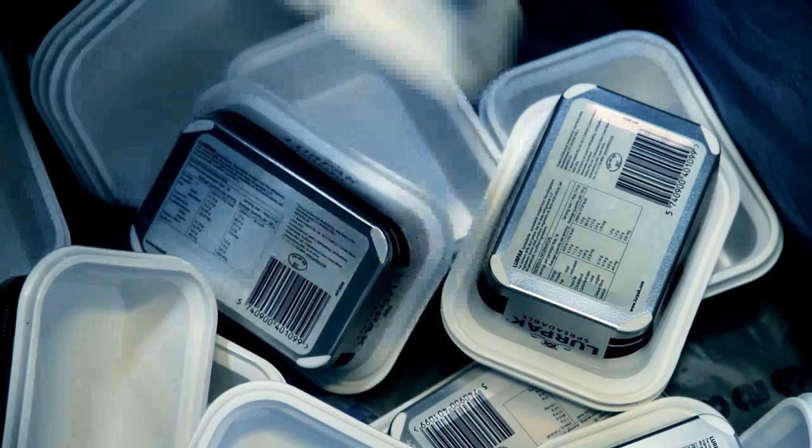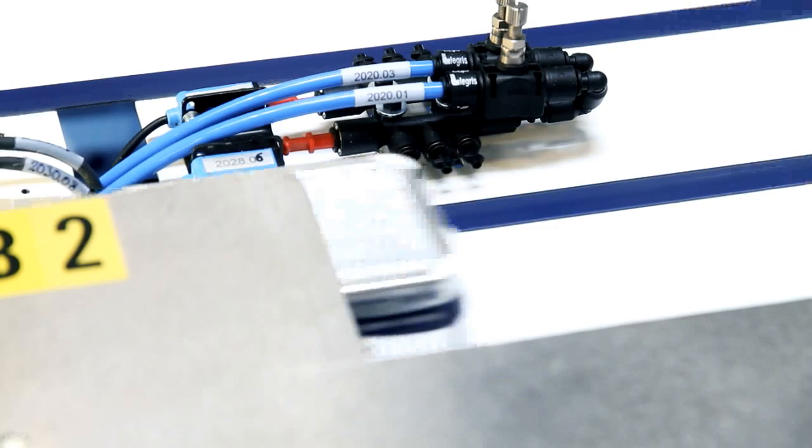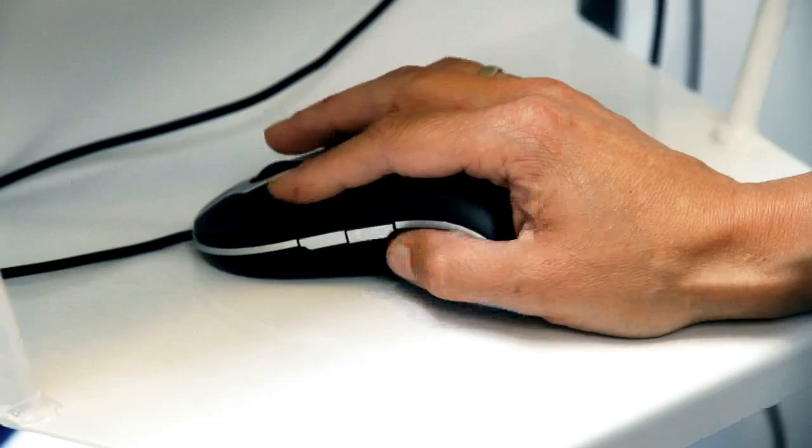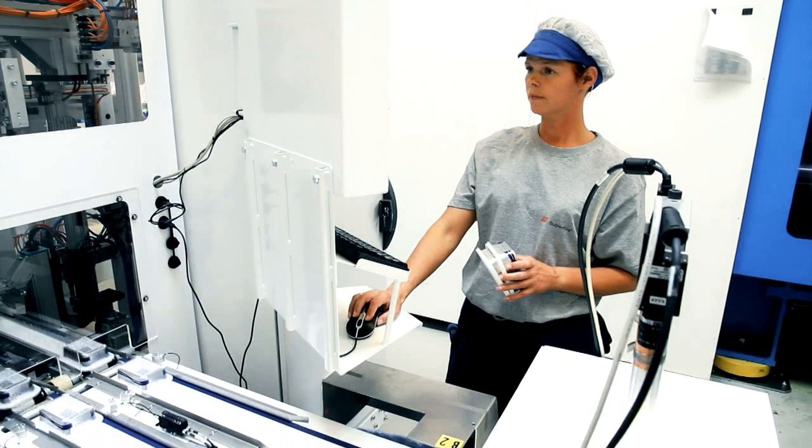Furthermore, the packaging inspector is counting the number of ejected items. This makes it possible to avoid overflow in the ejection bin. The user decides the maximum number of boxes the ejection bin should contain.